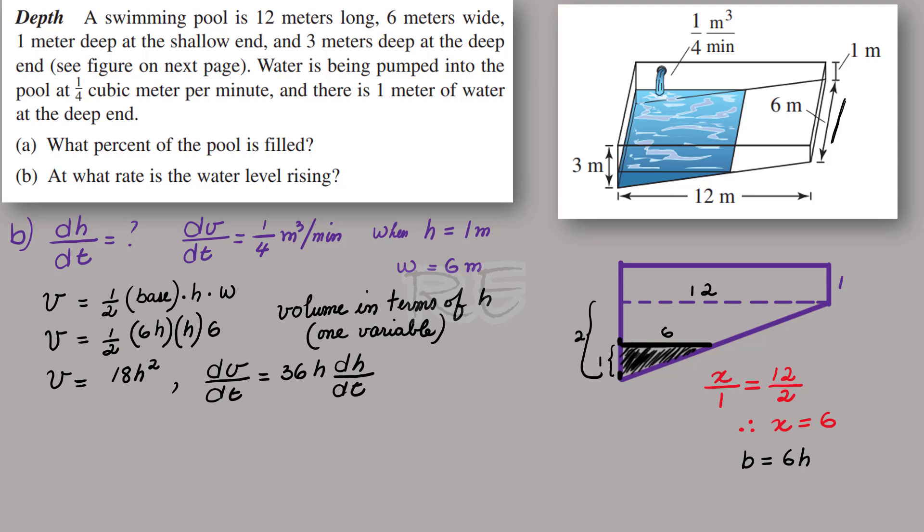And dv/dt will be 36h, 2 times 18, times dh/dt.